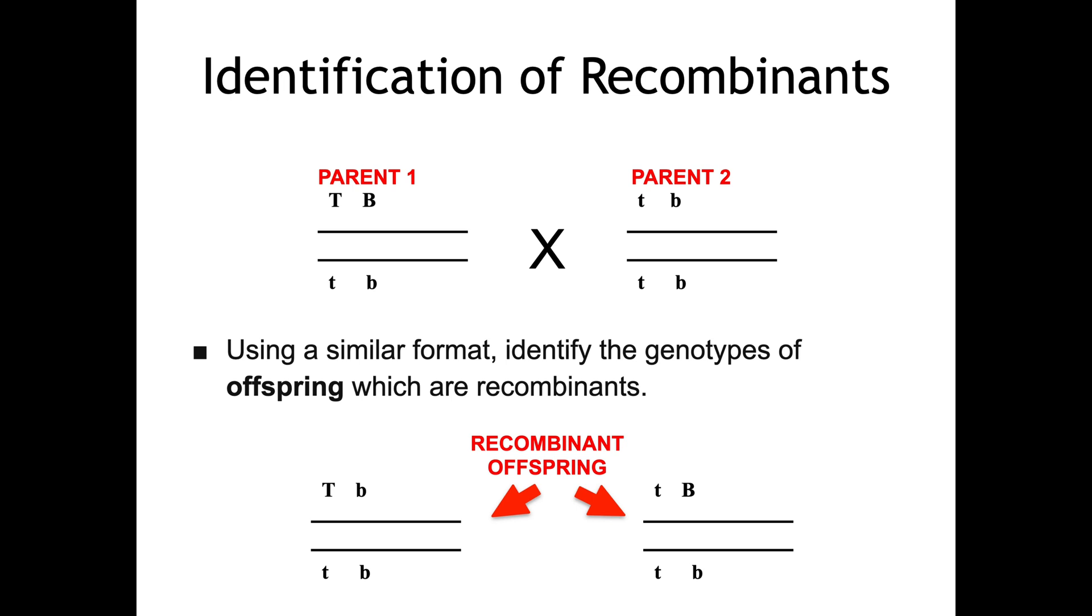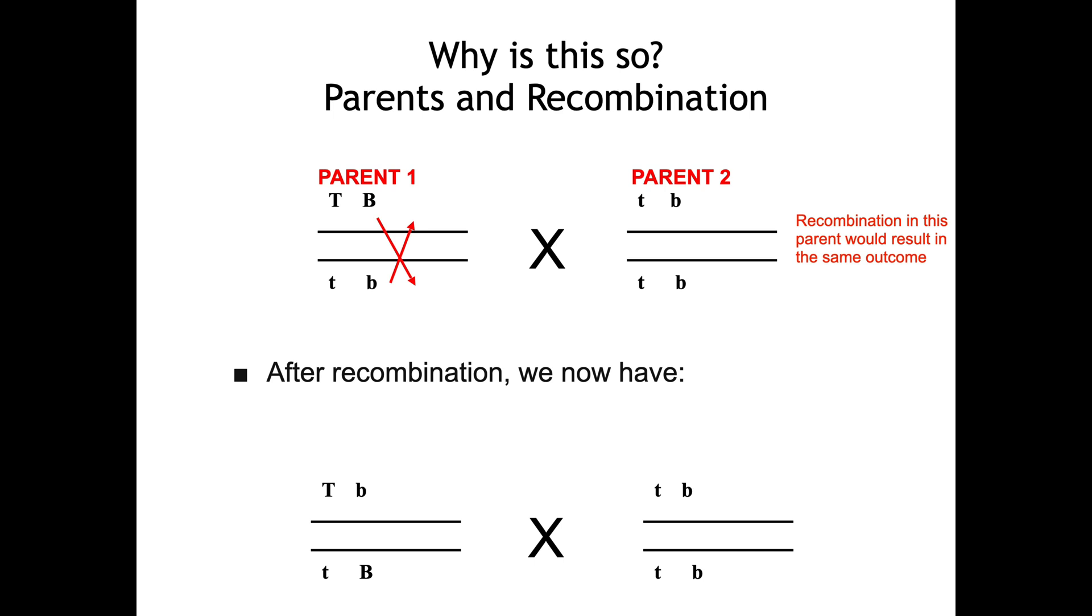I just demonstrated it as a written example, but what you have is that Parent 1 undergoing chiasmata formation and recombination, so that you now have what is observed at the bottom of the slide. Those are the situation after recombination.